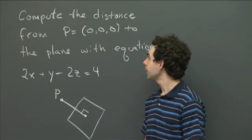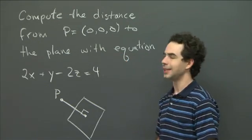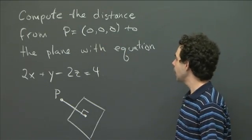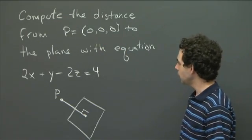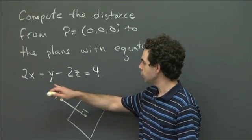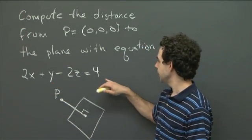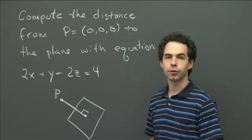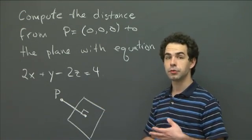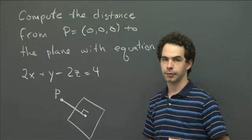So I've got a point, which happens to be the origin, which I'm going to call P = (0, 0, 0). And I've got a plane which has the equation 2x + y - 2z = 4. And what I'd like you to do is compute the distance from that point to that plane.